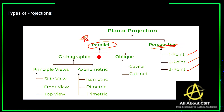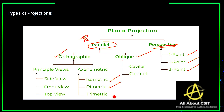Parallel projections are of two types: orthographic parallel projection and oblique parallel projection. Orthographic parallel projection has two views — principal views and axonometric. Principal views include side view, front view, and top view. Axonometric views include isometric, diametric, and trimetric — based on the angles, projections are displayed on the view plane. The two types of oblique parallel projections are cavalier and cabinet.